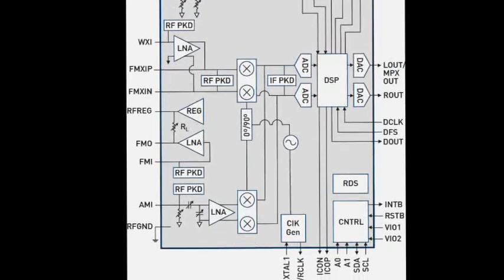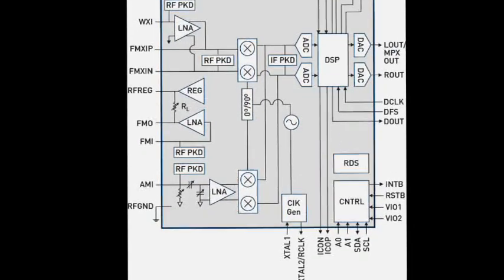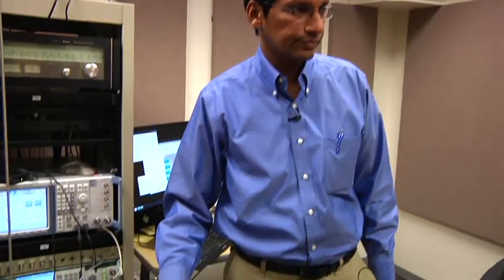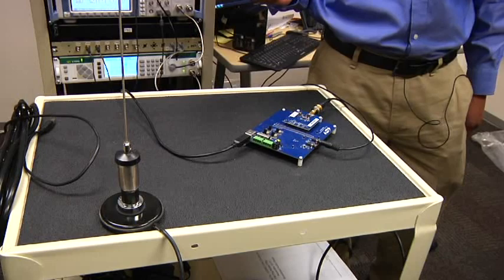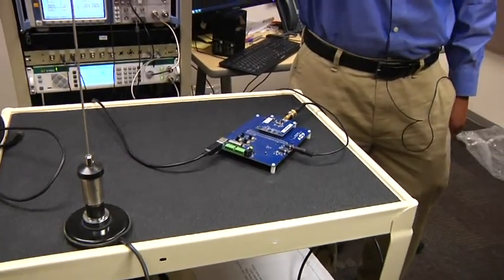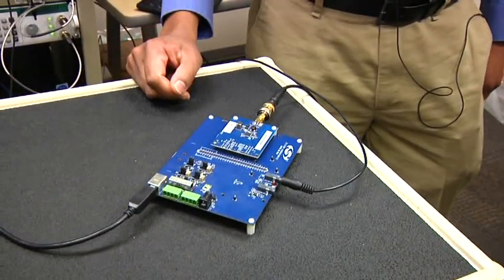So I just wanted to show you the sensitivity of this RF receiver. It's very sensitive. It can pick up very weak signals. Within this here, we're picking up off air. It's going through this shielded environment.